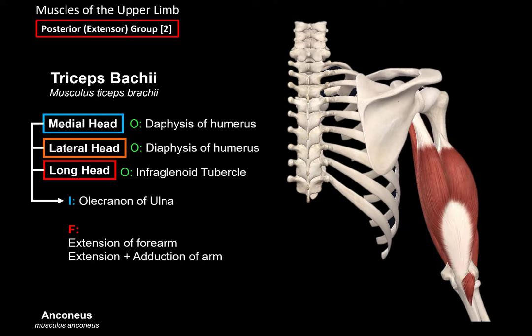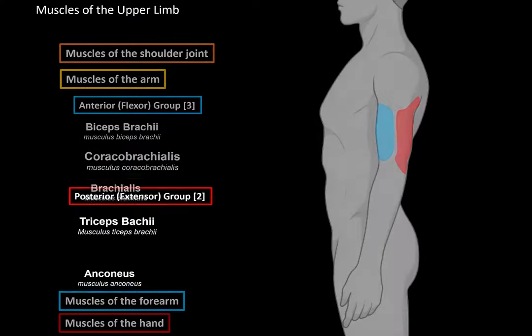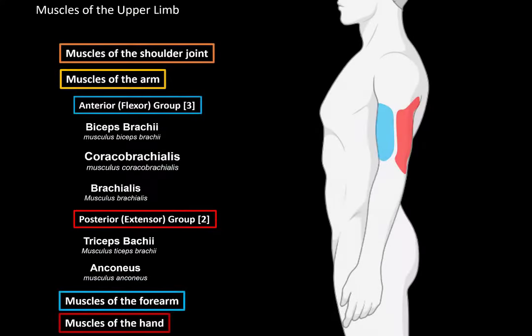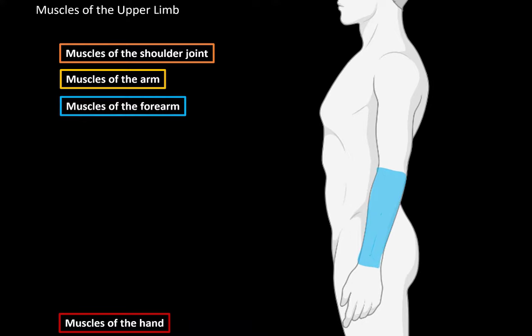Here's a more realistic view of the triceps — this is the long head, this is the lateral head, and this is the medial head. So that was all the muscles of the arm. I really hope this video helped. The next video is going to be about the muscles of the forearm.